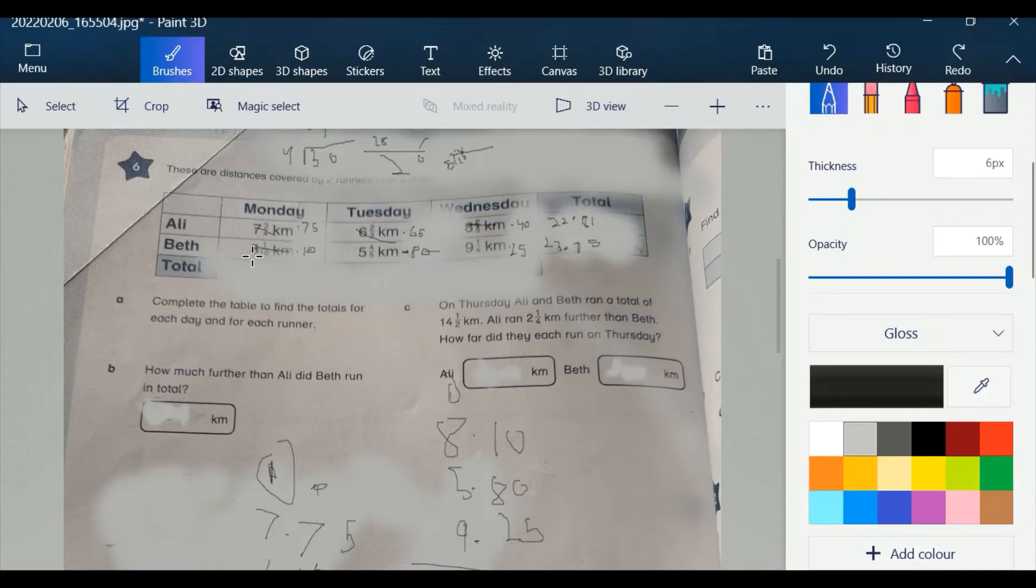This means 7 plus 8 is equal to 15, and 0.75 plus 1 is equal to 0.85, so it's 15.85.